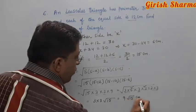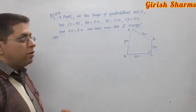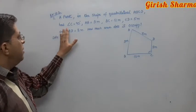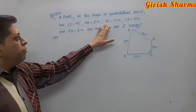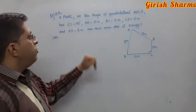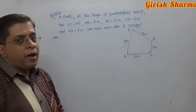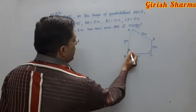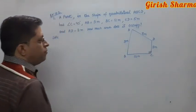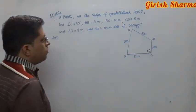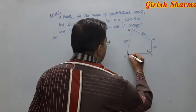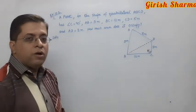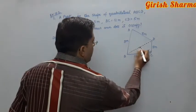Exercise 12.2, question 1: find area of a path in the shape of quadrilateral ABCD where angle C is 90 degrees, AB is 9 meters, BC is 12 meters, CD is 5 meters, and AD is 8 meters. To find area, join BD, splitting the quadrilateral into two triangles: right triangle BCD and triangle ABD.